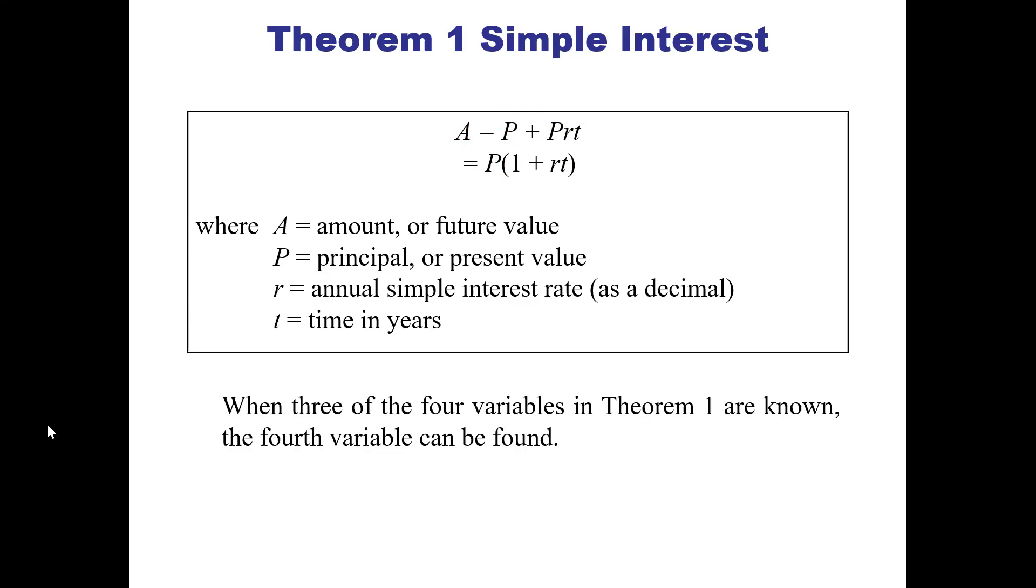When we know three of the four variables—whether A, P, R, and T—as long as we know three of them, we can find the fourth one using algebra.